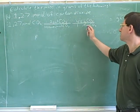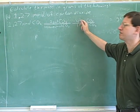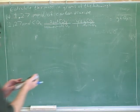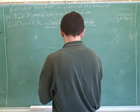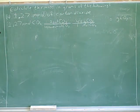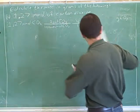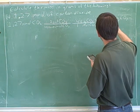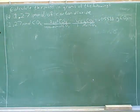You use the periodic table for this. That's 12 plus 2 times 16 is 44. The answer is 0.05588. We could round that off a little bit more.